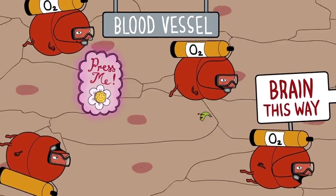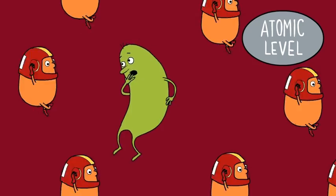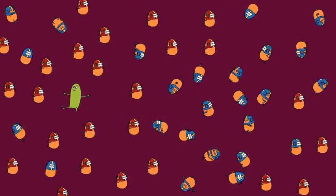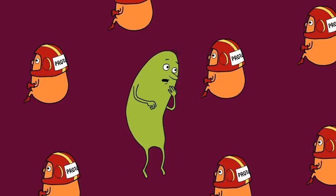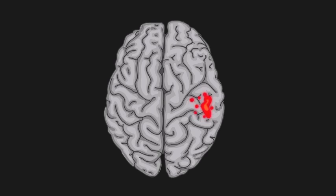This can be measured because at an atomic level, a magnetic field makes protons spin. The stronger the magnet, the faster the spin. Crucially though, the protons in oxygenated blood spin more slowly than those in non-oxygenated blood. And we can detect these differences with our MRI scanner.